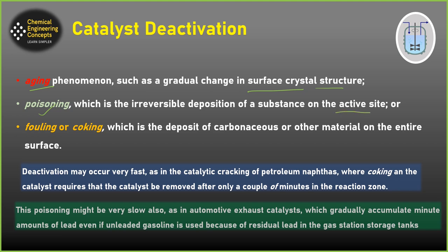We can also have poisoning as another deactivation process, in which there is an irreversible deposition of a substance on the active sites. For example, in a combustion reaction we generally have coke deposition — this is because of poisoning. This should be noted as irreversible. The third mechanism of deactivation is fouling or coking, which is the deposition of carbonaceous or other materials on the entire surface. You must be able to differentiate: in poisoning, deposition occurs only on active sites, whereas in fouling, deposition of carbonaceous material covers the entire catalyst surface.